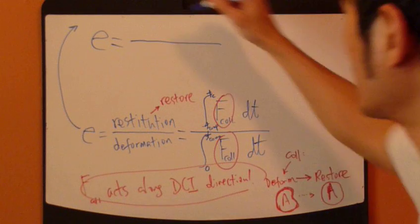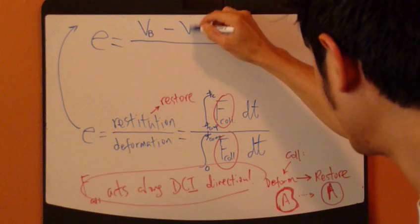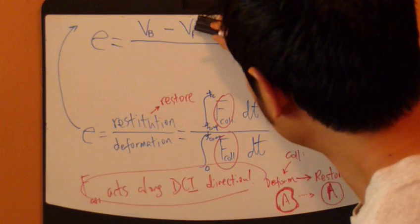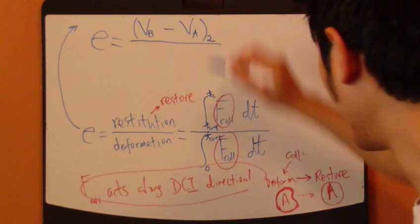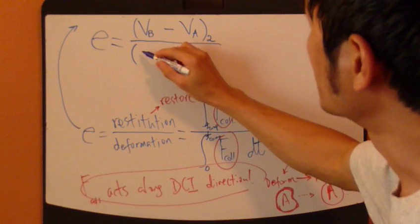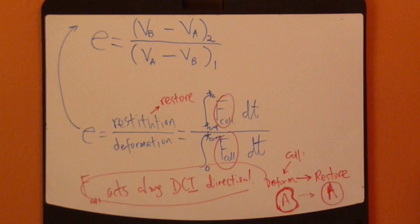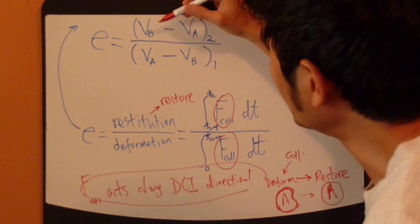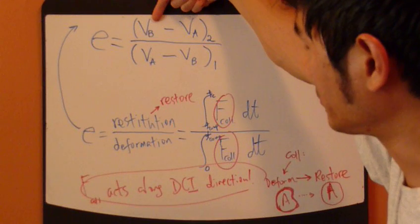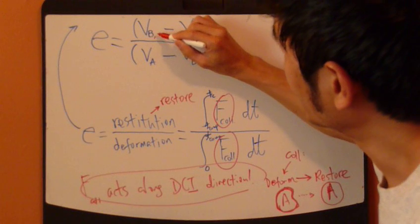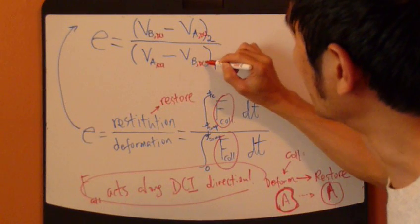E, coefficient restitution, equals the difference between velocity VB minus VA after, that is final, divided by the A minus the B before. Very important, however, because the fact that this collision forces act along the DCI direction. So, when you take the component of velocity, you have to take the DCI direction component of velocity.